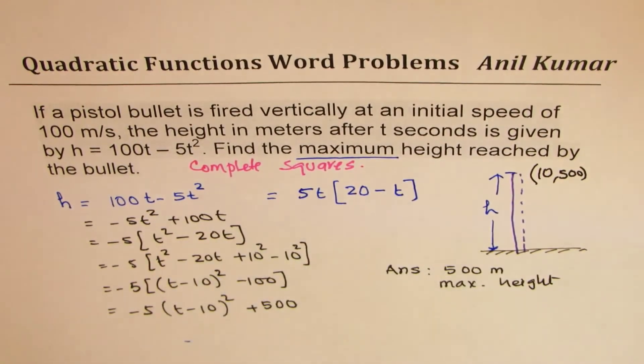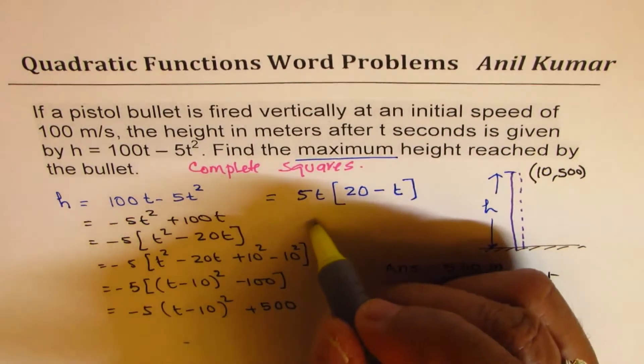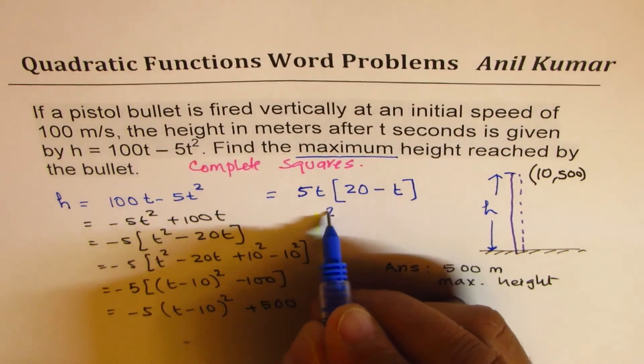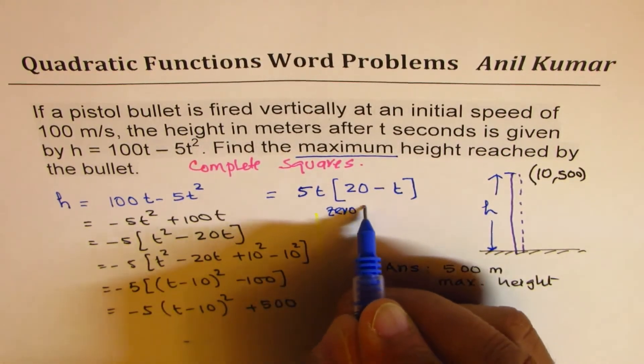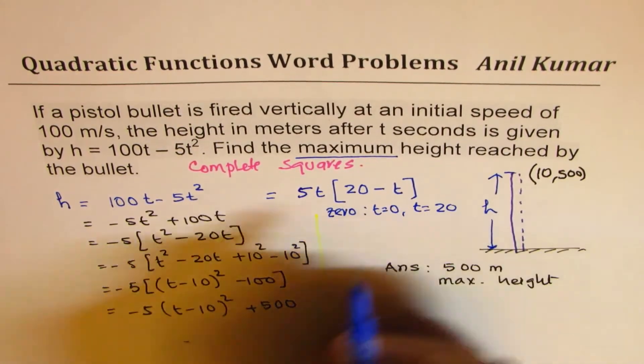Now that factor means we have two zeros. So this means we have two zeros. So we say 0 at t equals to 0 and at t equals to 20.